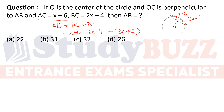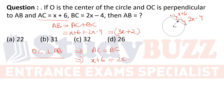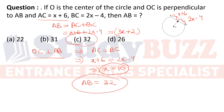Since OC is perpendicular to AB and O is the center, OC divides the chord AB into two equal halves. So AC = BC, which gives x + 6 = 2x − 4, and x = 10. Therefore AB = 3(10) + 2 = 32. Option C is the answer.